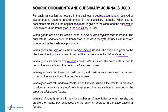When goods are returned by a client or by a debtor, a credit note is issued. So when we sell goods to a debtor, a credit invoice is issued. When goods are returned by a debtor, a credit note is issued. So an invoice and a credit note are issued to a debtor. The credit note is used to record the transaction in the debtor's allowances journal.